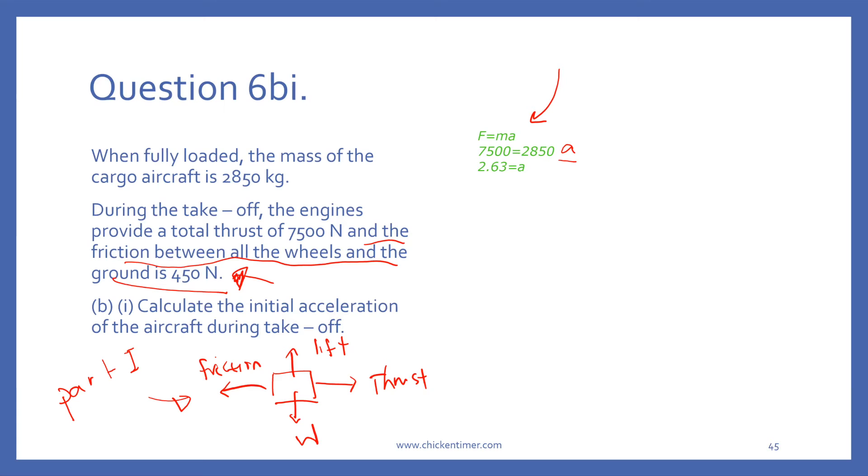The resultant force is 7050. So 7500 minus 450 equals to 2850 times A. Be careful of units.